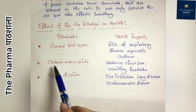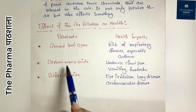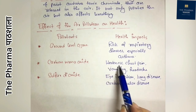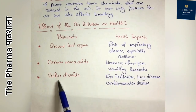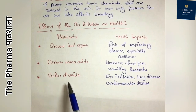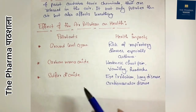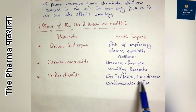The second gas is carbon monoxide, which causes weakness, chest pain, vomiting, and headache. The third gas is sulfur dioxide, produced by industrial processes or volcanic eruptions, which causes eye irritation, lung disease, and cardiovascular disease.